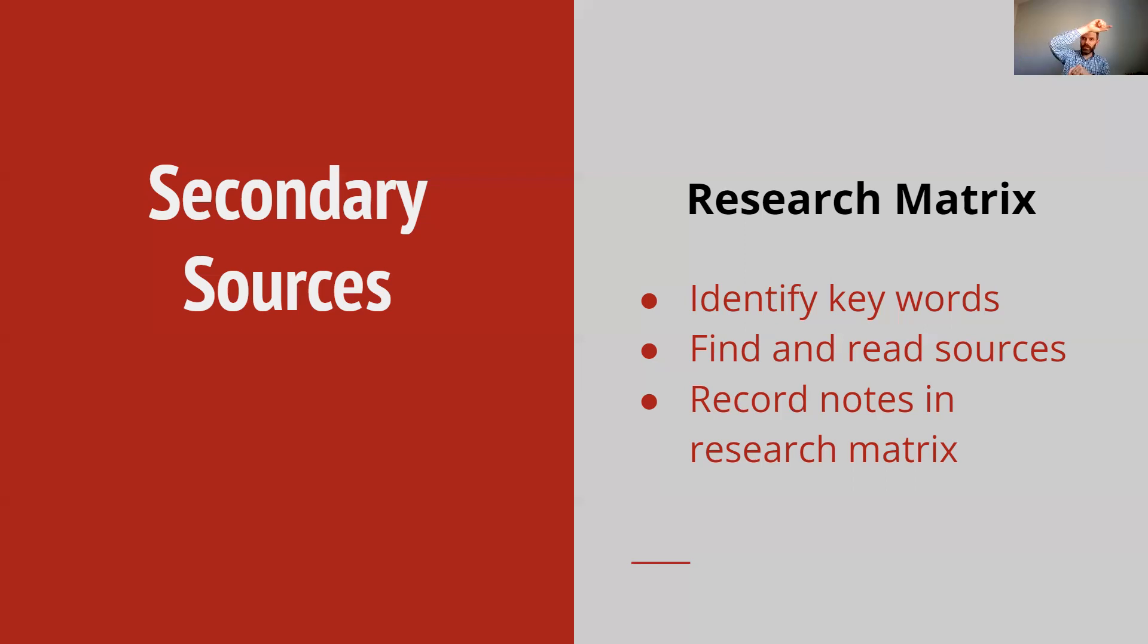Then I have other columns for the questions that I have for my research paper. As I read each source, if that source provides information that helps answer my question, I'll write it in that cell block. If another source has a different answer, I'll write it in the same column so I can compare whether the sources say similar or different things.